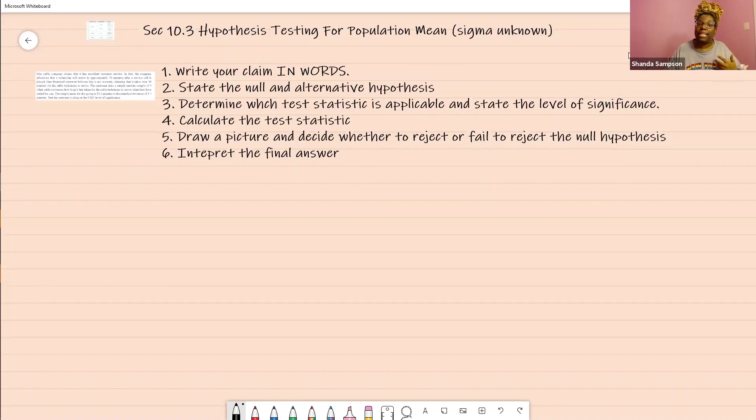I'm going to get started with hypothesis testing for population mean where sigma is unknown. So if you want to know about sigma's known, check my video out. But sigma is unknown, everything is the same. So I want you to start off, here are the steps.